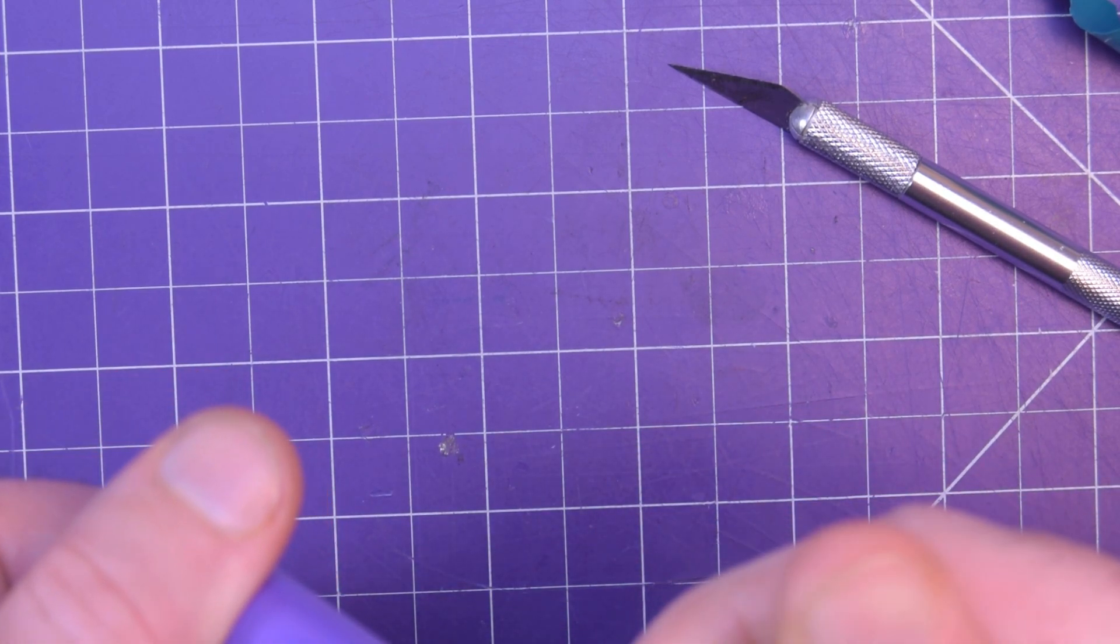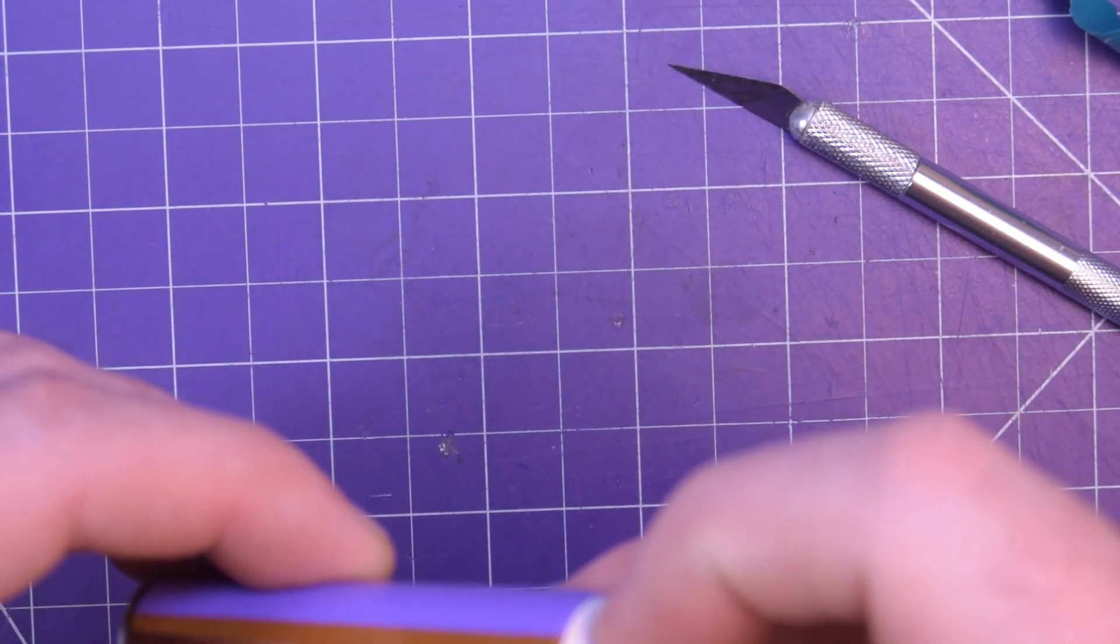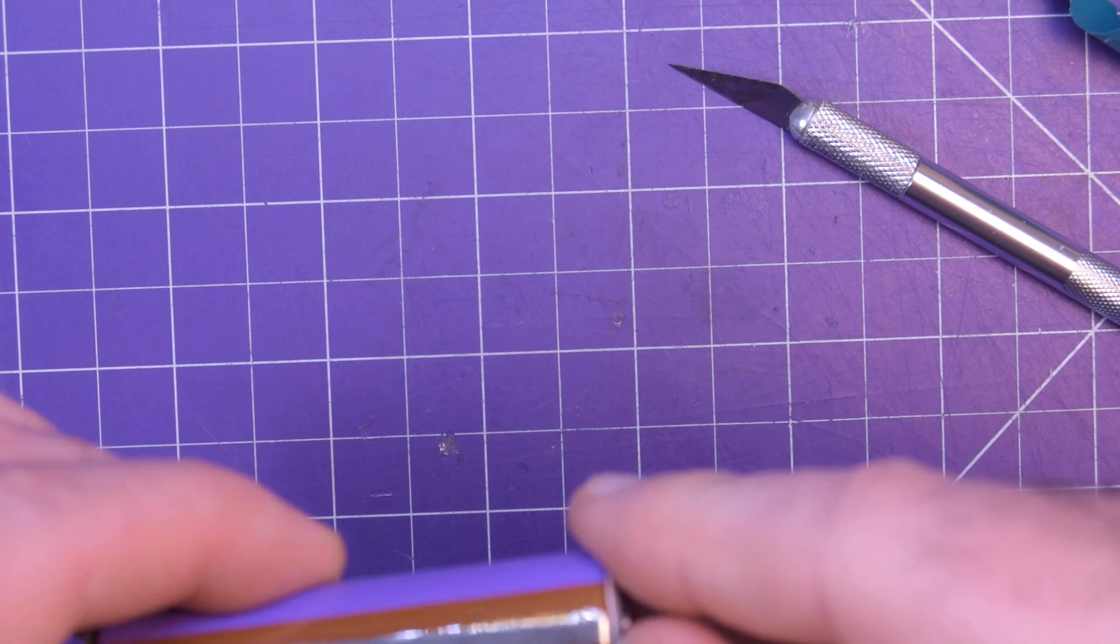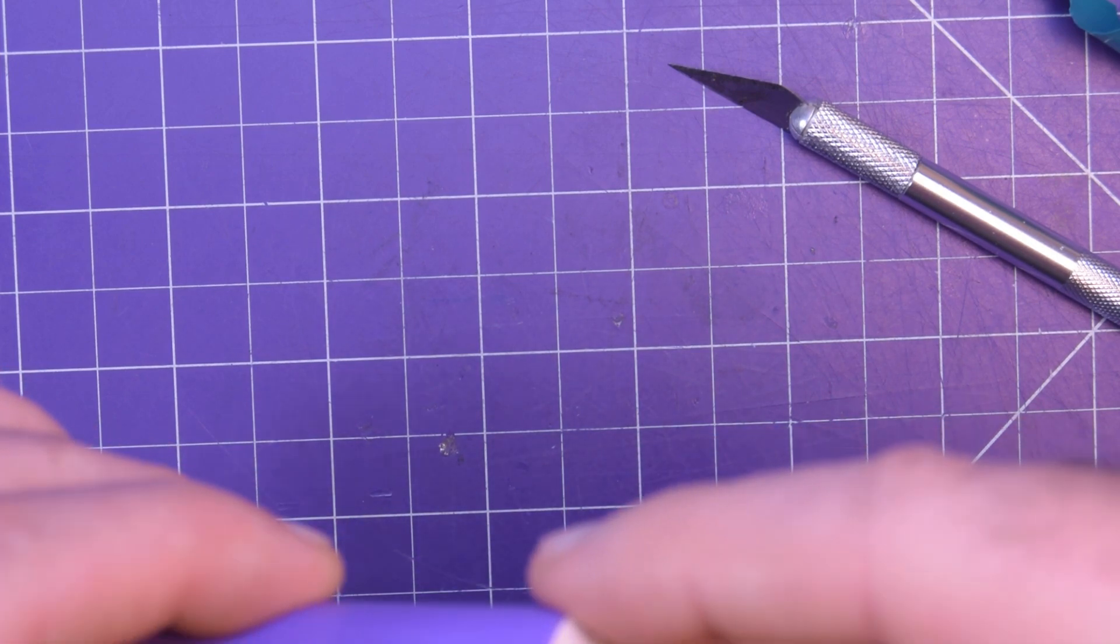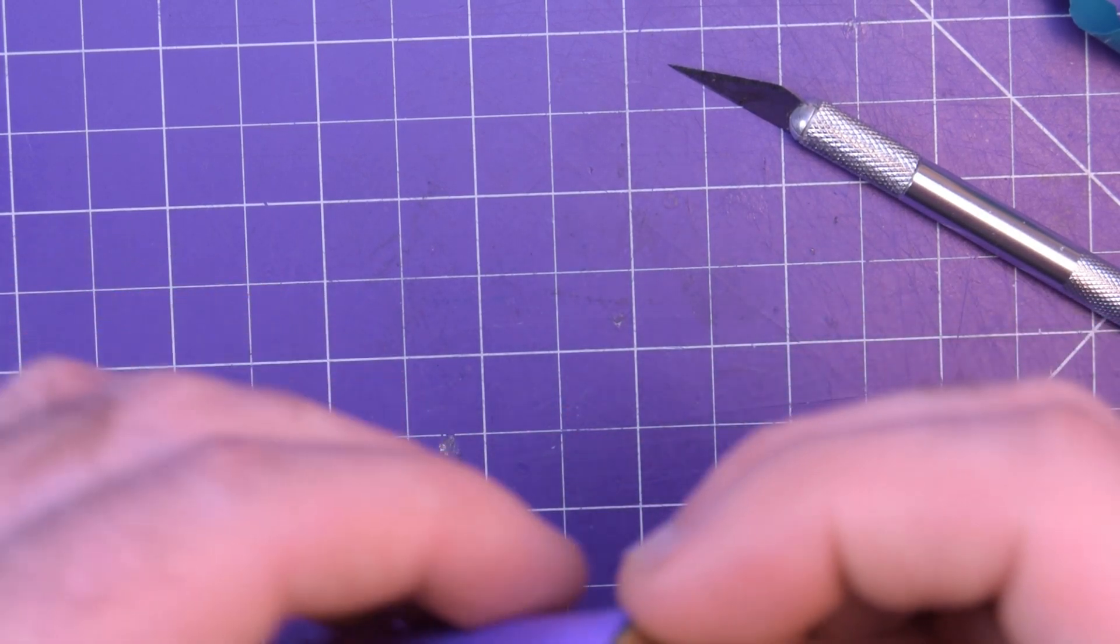So here we go. This is the protection circuitry here. That's a little strip I was telling you guys about. And this is just a sticker. So yeah, these are unlabeled Chineseium cells.